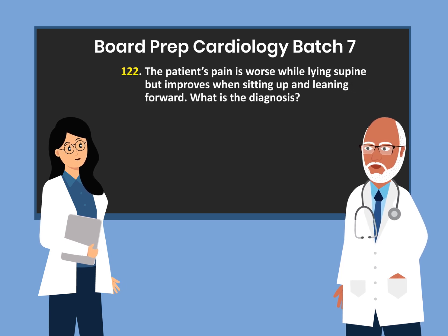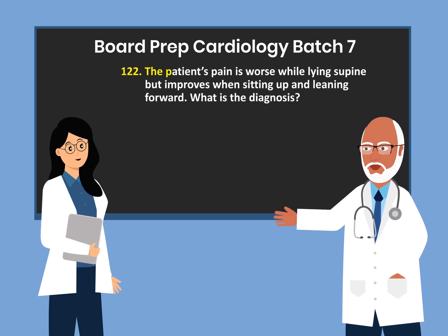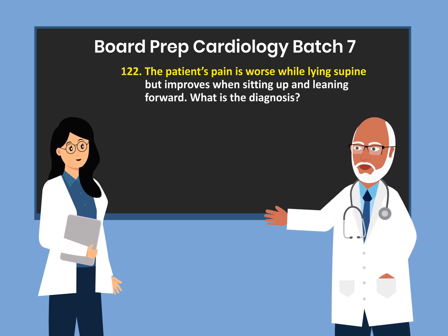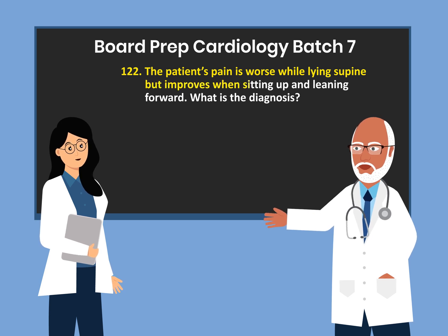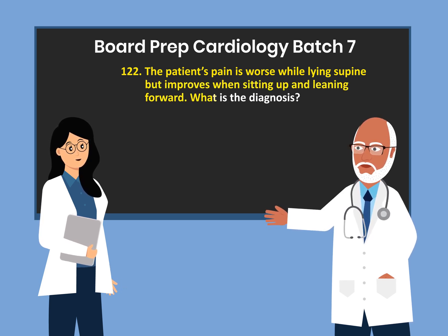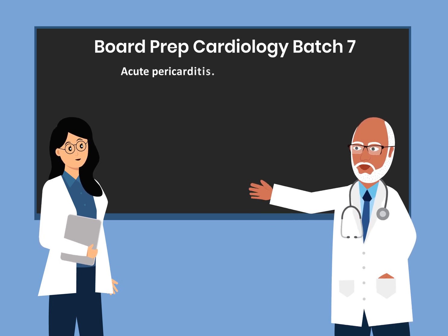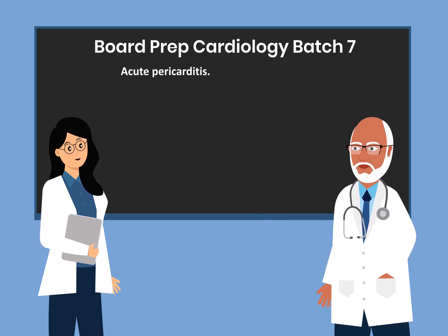Question 122. The patient's pain is worse while lying supine but improves when sitting up and leaning forward. What is the diagnosis? Acute pericarditis.